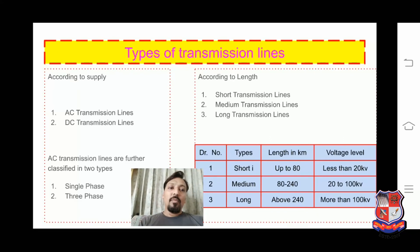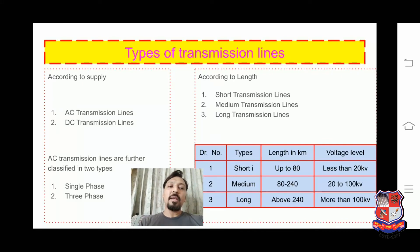The voltage level of these three transmission lines: for the short transmission line it is up to 20 kV, for the medium transmission line it is 20 kV to 100 kV, and for the long transmission line it is more than 100 kV.